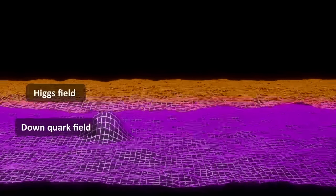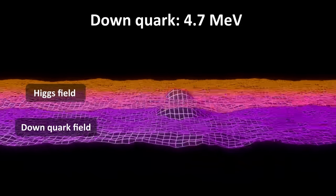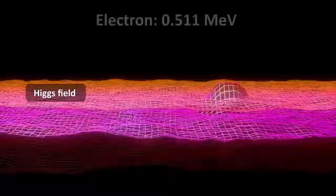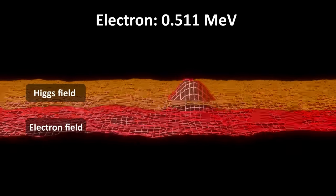You can think of this field as like an energy grid that is everywhere in the universe. The different elementary particles take different amounts of energy from this grid. The more energy they take, the more they are mass. So for example, a down quark, which has a mass of 4.7 MeV, or mega electron volts, interacts more intensely and takes more energy from the Higgs field than an electron, which has a mass of about 0.5 MeV.